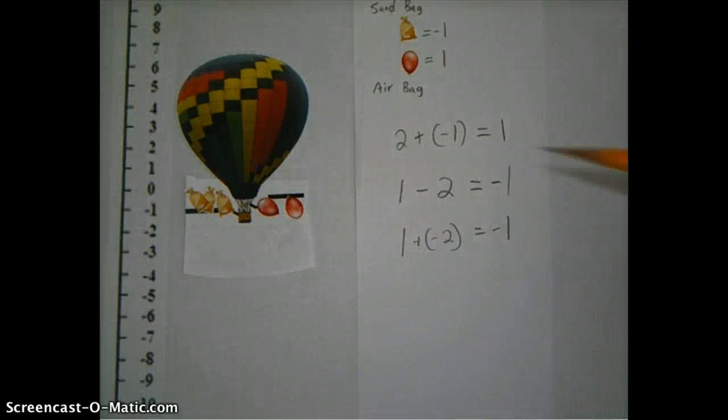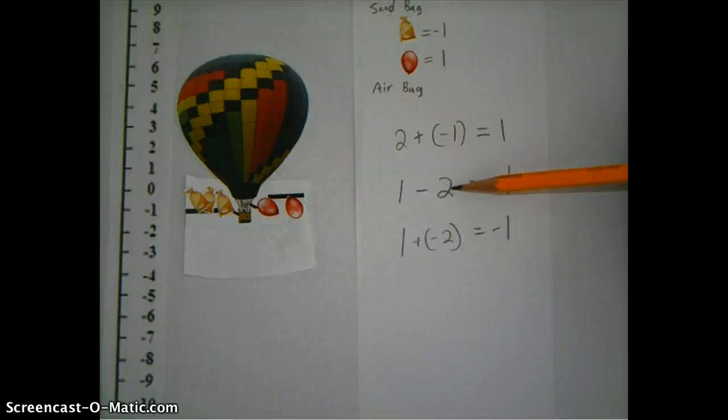But there are two different ways. So in other words, another way of looking at this is subtracting two of these airbags. It's going to give us the same result as if we were going to add two of these sandbags. In other words, subtracting two will give us the same result as adding a minus two, which is why we end up with the same result of an altitude of minus one.